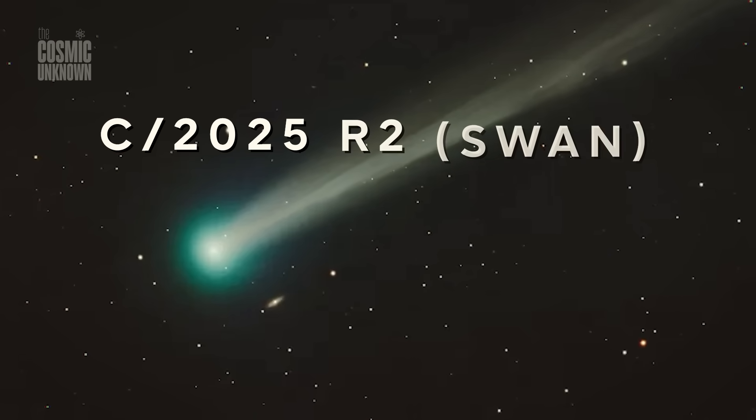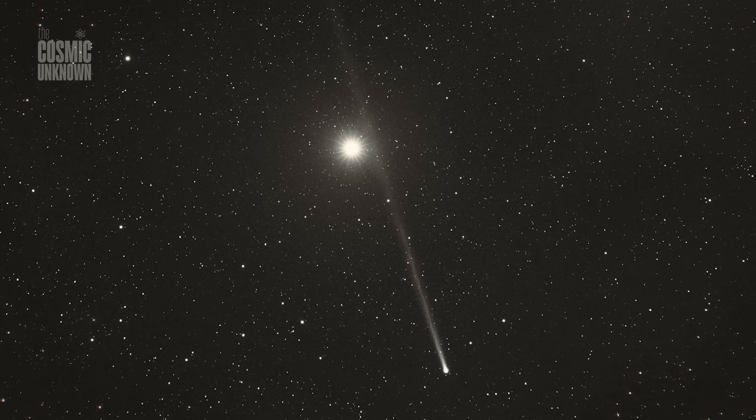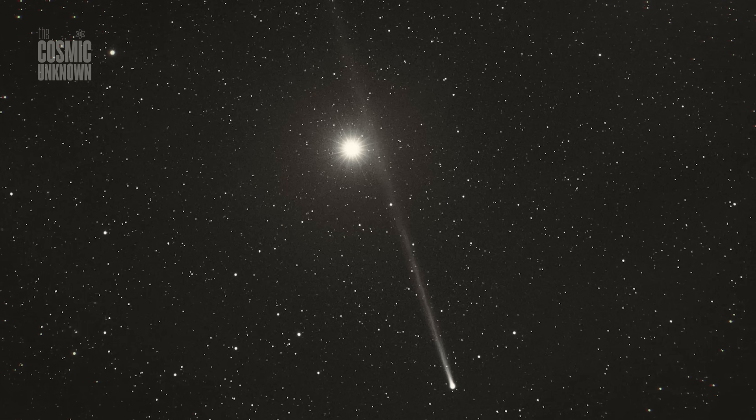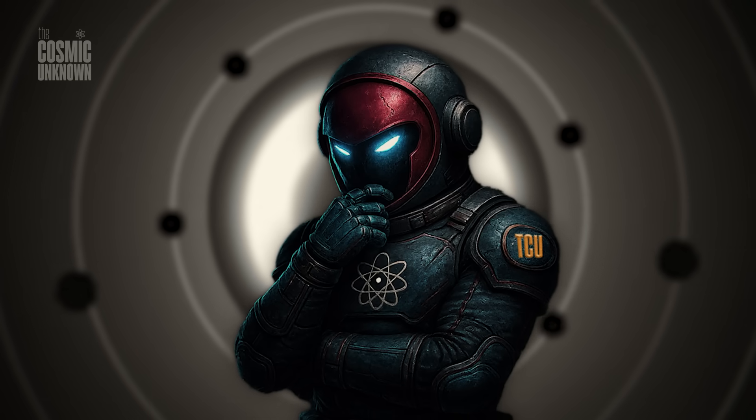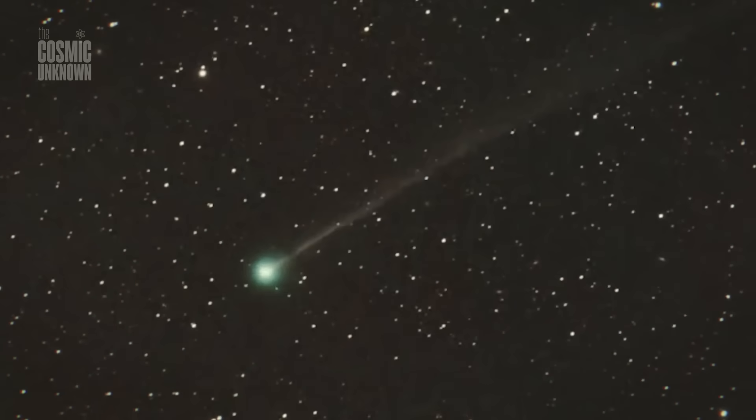It came from behind the sun, not in brightness, but in silence. R2 SWAN wasn't spotted by any telescope on Earth. It didn't blaze across our sky like some celestial warning. Instead, it emerged in a quiet frame of hydrogen, a ghost hidden behind the solar glare until it drifted just far enough, and then it was there.